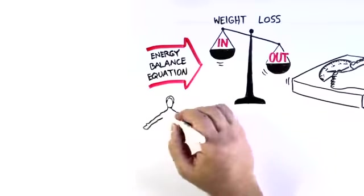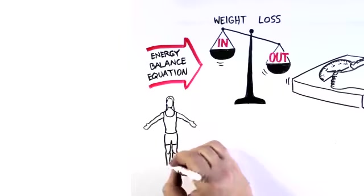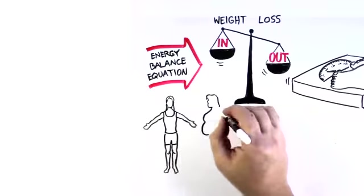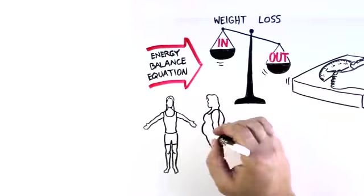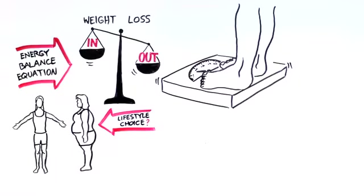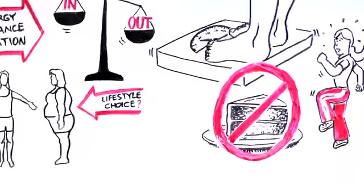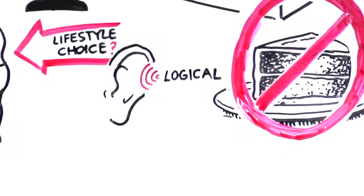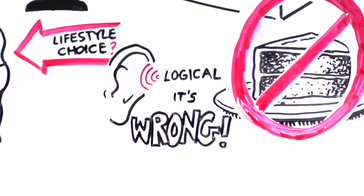Most people think that those of us who properly manage our energy balance remain lean, whereas those of us, like Amanda, who eat too much and exercise too little, become obese. We view obesity as a lifestyle choice and the cure for it is simple. Eat less and exercise more. This may sound logical, but it's wrong. Let me explain.